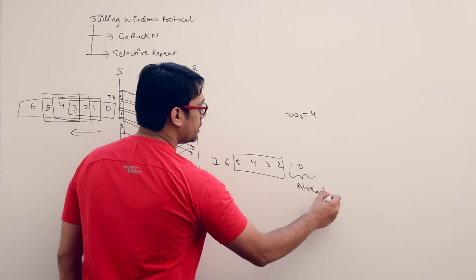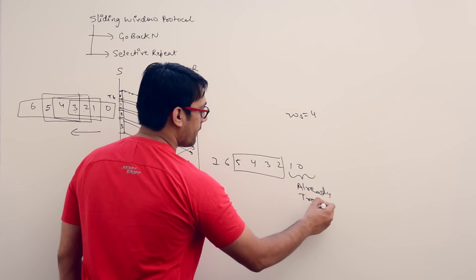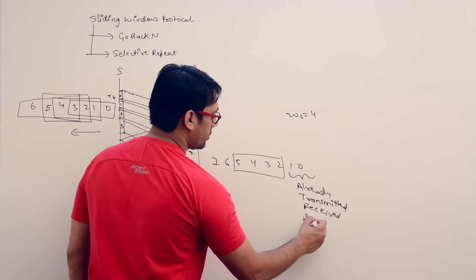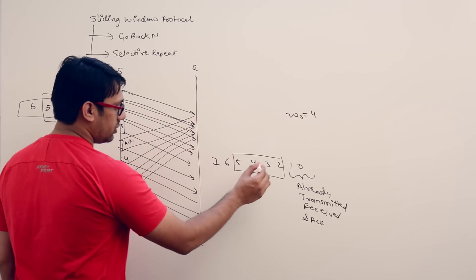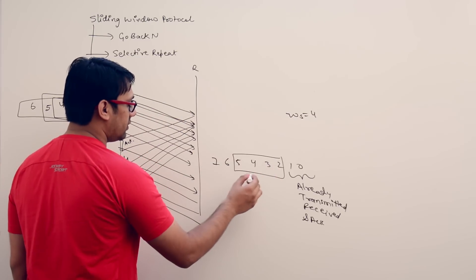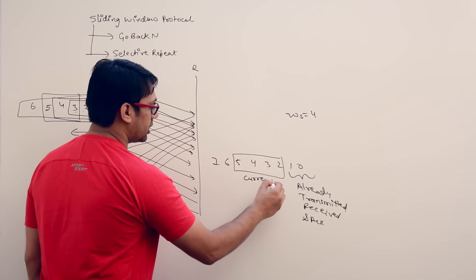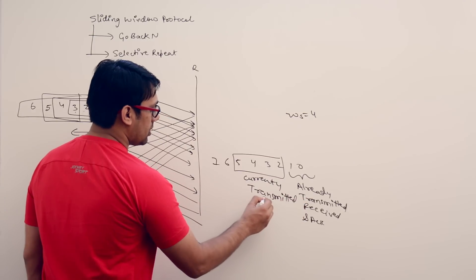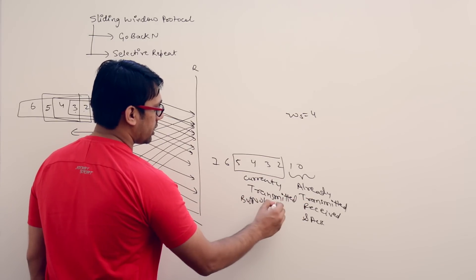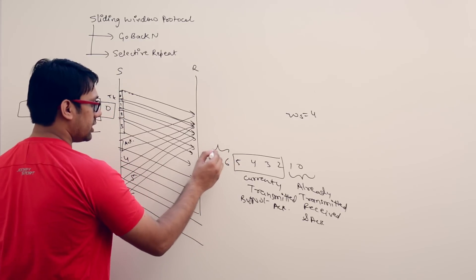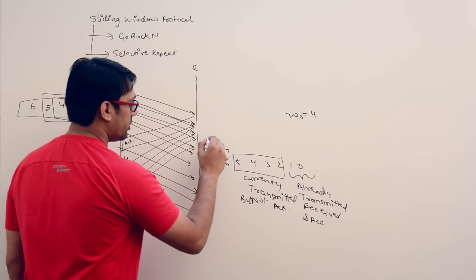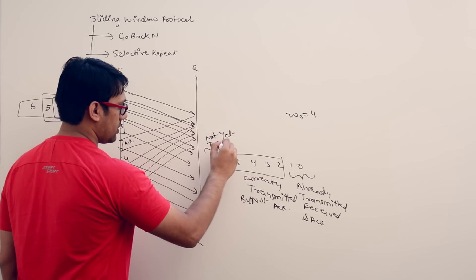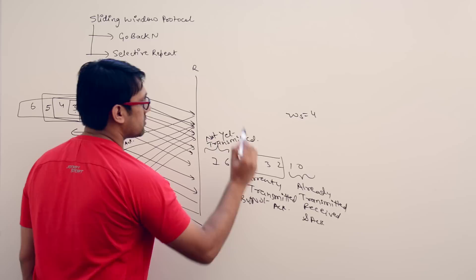The packets inside the window are currently transmitted but not yet acknowledged. The packets to the left side of the window are the packets which are not yet transmitted.